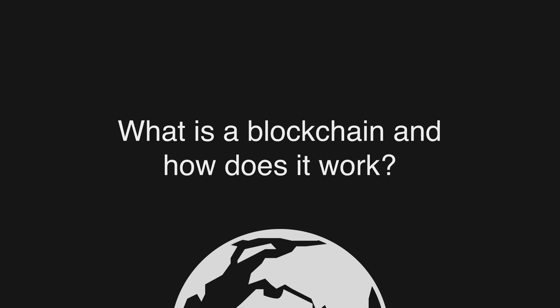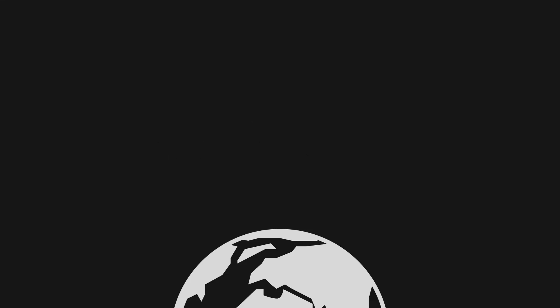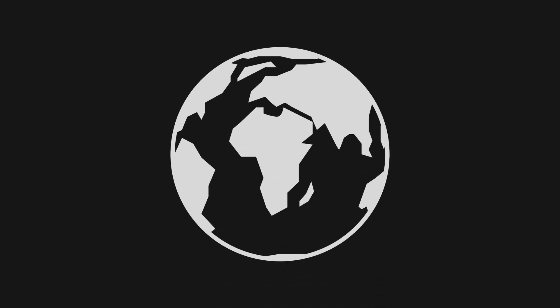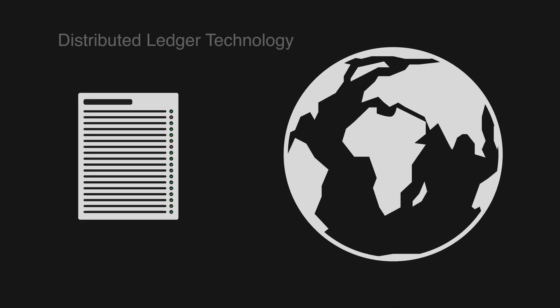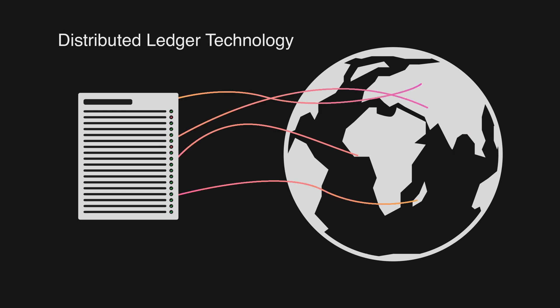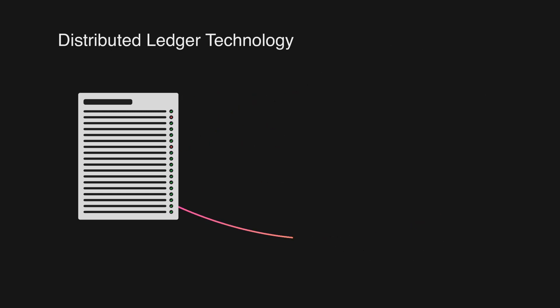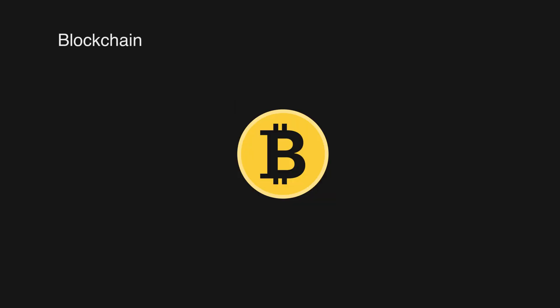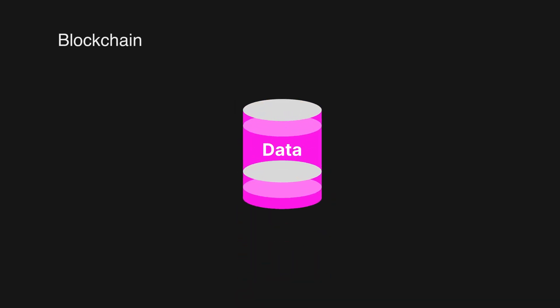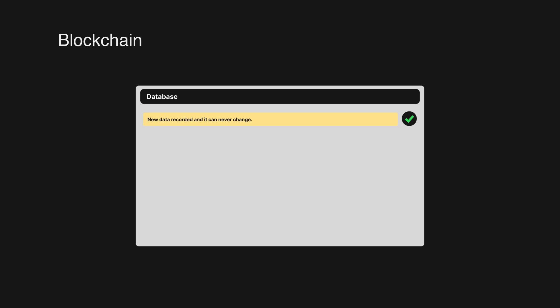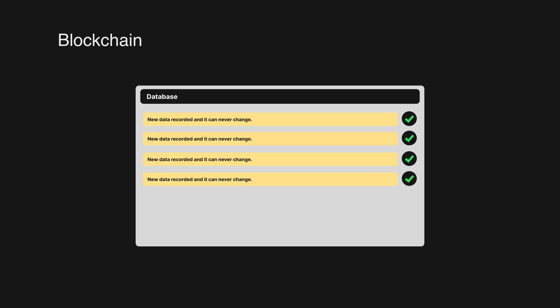What is a blockchain and how does it work? In essence, blockchain is based on a distributed ledger technology, DLT for short. Think of a blockchain as a secure database that can only store immutable data — data that cannot be changed — and it is highly transparent.